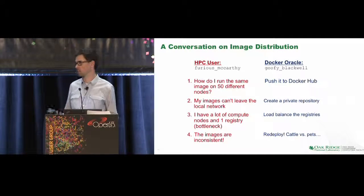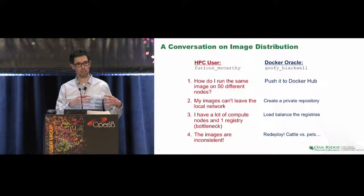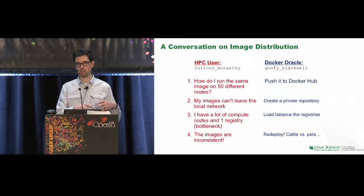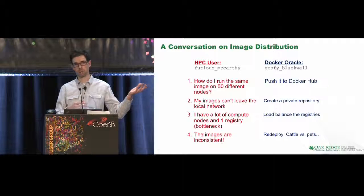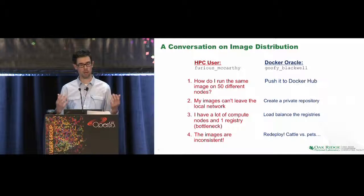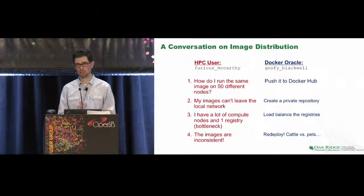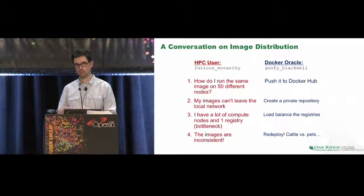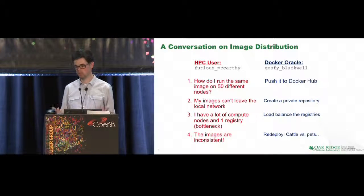Moving on to the next issue: if you have one registry serving a lot of compute nodes, this is a bottleneck. With 50 nodes maybe it works, but what if you have 100 or 1,000? So how do you fix that? The Docker Oracle says, just load balance the registries. Now you have an infrastructure you're building out for Docker itself — beyond your application infrastructure, you now have registries and an HTTP load balancer. It would work, but you have duplication of data that needs to move across the network.